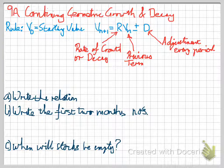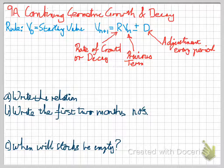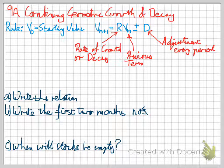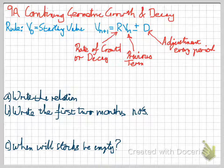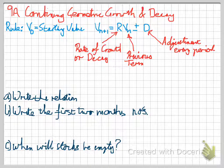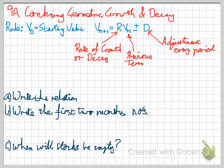Good afternoon, guys. Today we're having a look at combining geometric growth and decay. What this basically is, is we take the previous recurrence relations for geometric growth and decay, and we adjust it for every period.